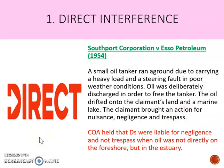This case went to the Court of Appeal, which said that the defendants were liable for negligence but not trespass, because the oil was not directly discharged onto the foreshore but into the estuary — it drifted and eventually ended up on the land. That is not the direct interference required. If Esso had come and dumped the oil directly onto the claimant's land, there would have been a trespass, but the drifting was not enough.